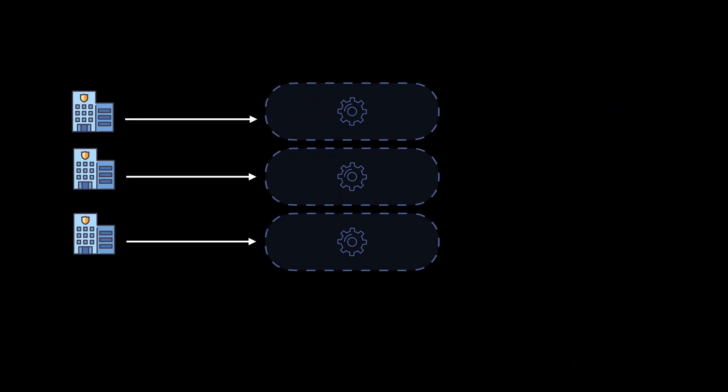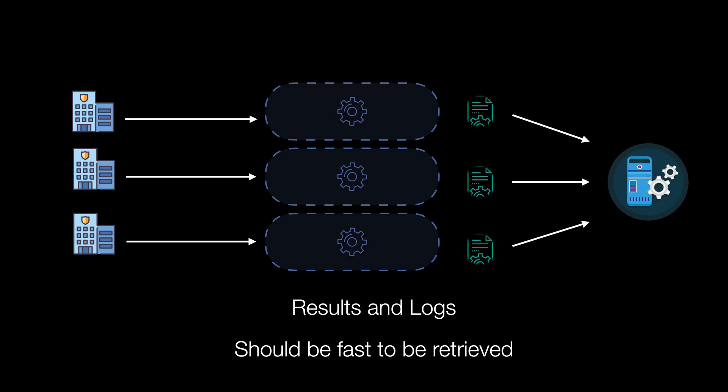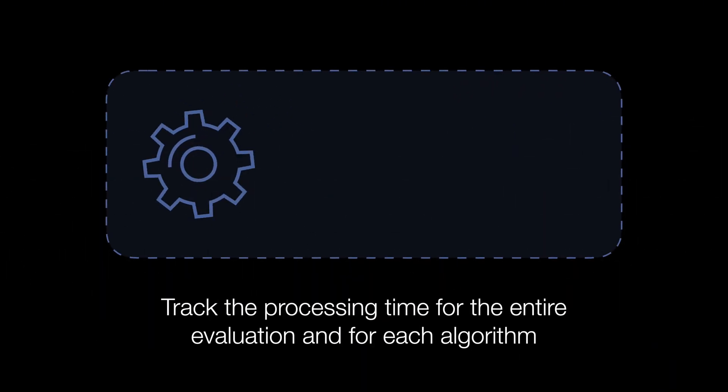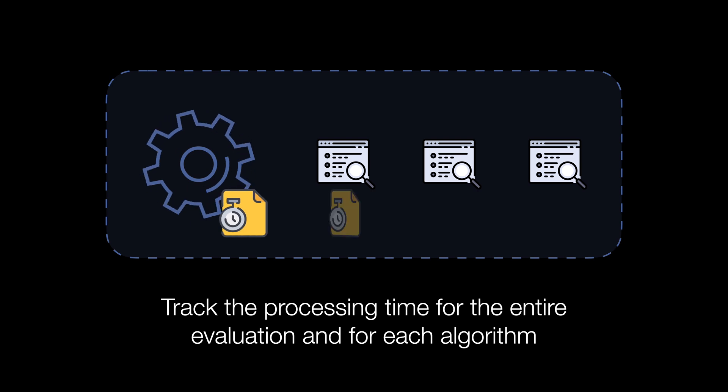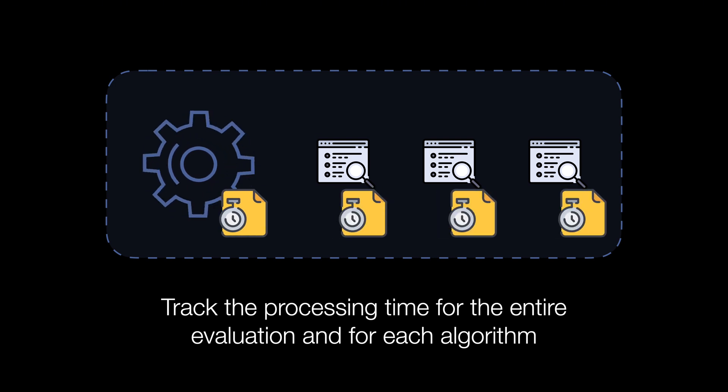such as the company type or shareholder members. Additionally, we want to quickly retrieve the scoring results and logs. It should also be possible to track the execution times for the entire evaluation and for each algorithm. Note that over time, algorithms may change, be removed, or new ones may be created. And for a specific score evaluation, some external services may be unavailable, so some algorithms may not reach a conclusion.